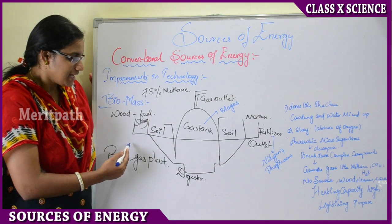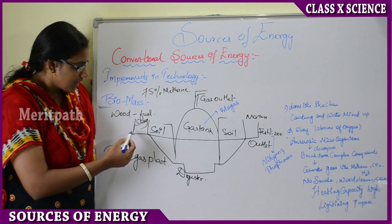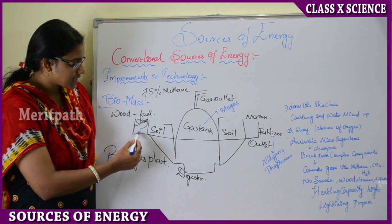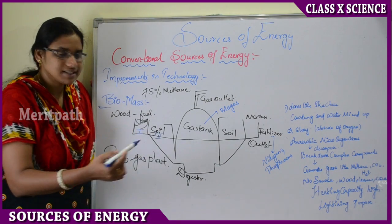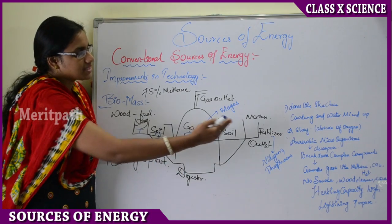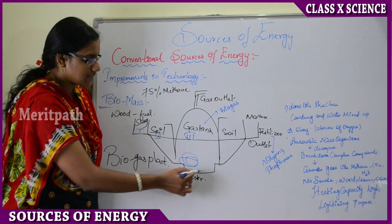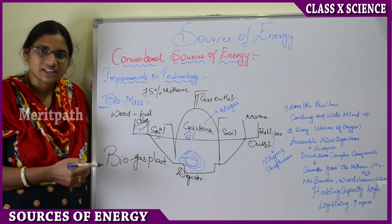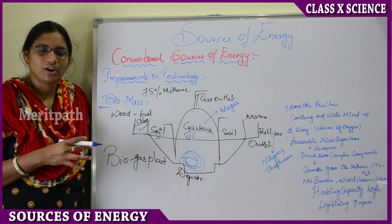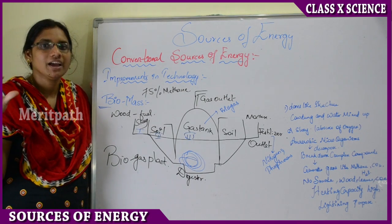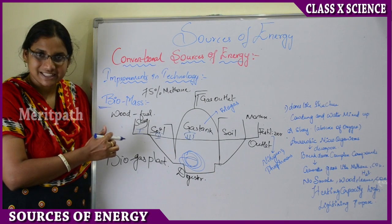Now let us see the structure of the biomass plant. It has three stages: the slurry stage is the first stage, the soil stage is the second stage, and the gas tank is the third stage. The same process is repeated from the other side also. This tank is known as the digester — just like our stomach is the digester for us. All the waste materials, cow dung, and slurry are dumped into it.